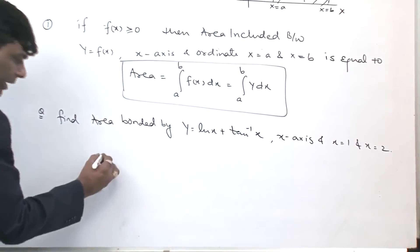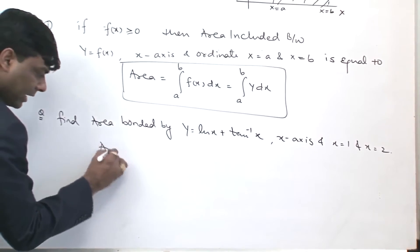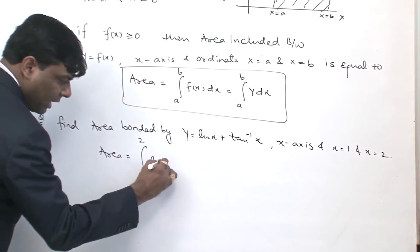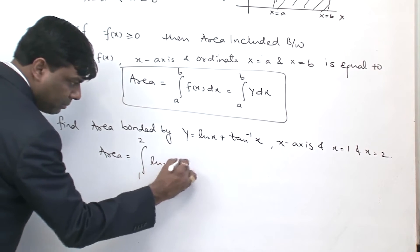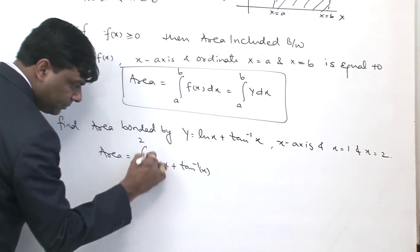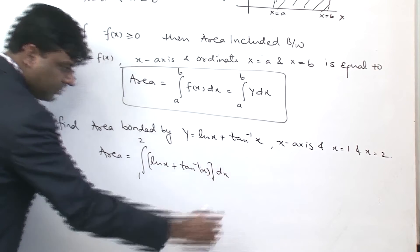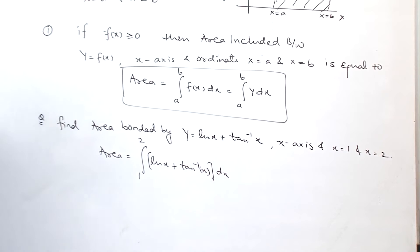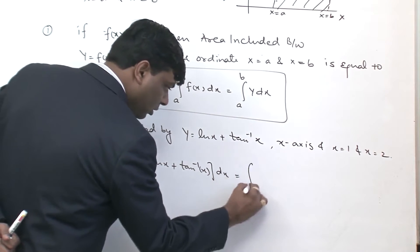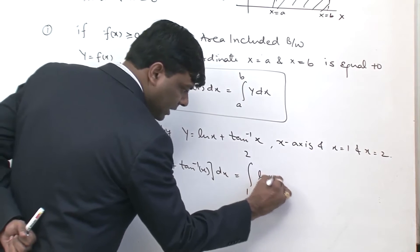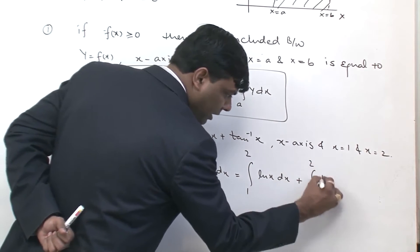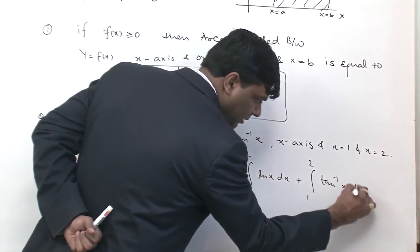So, we can say that the area is equal to integral 1 to 2 of [ln(x) + tan⁻¹(x)] dx. That will be equal to integral 1 to 2 of ln(x) dx plus integral 1 to 2 of tan⁻¹(x) dx.